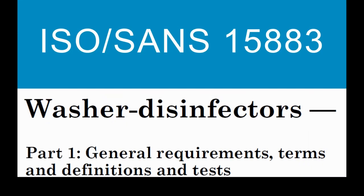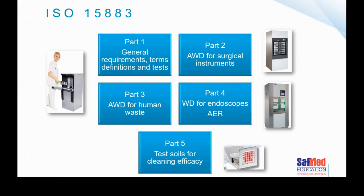ISO standard 15883 is one of my favourite standards personally. When I joined Safmed, I spent an entire week studying it. I was fascinated to understand that what we assume to be just a washer or a dishwasher is not just a dishwasher. The attention to detail and the parameters required in the manufacture of these devices are quite fascinating. ISO 15883 has five main parts, with additional parts being worked on. Part one covers general requirements — terms, definitions, and a variety of test methods. Part two is for specifically surgical instrumentation.